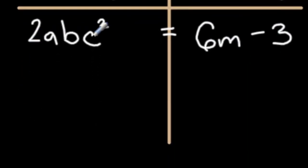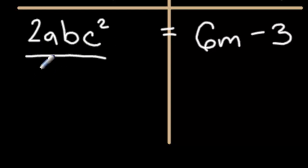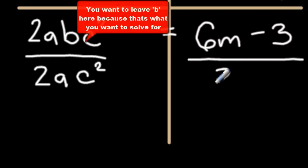When all these terms are next to each other, that's multiplication. To cancel out the terms you don't want, you can divide both sides by 2ac squared. Remember to do it to both sides to balance out the equation.